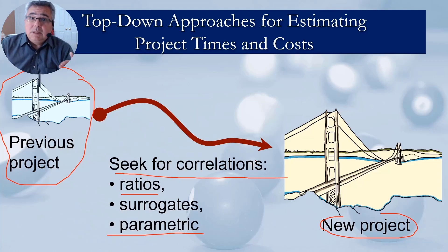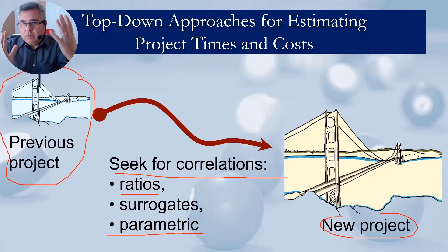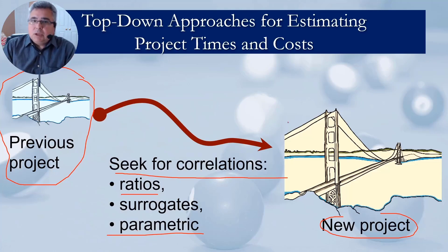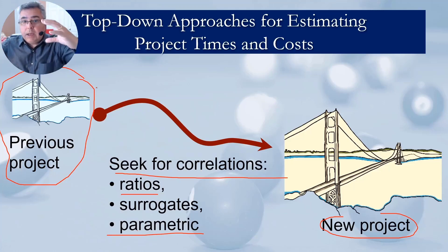That is a very rough estimate, because usually projects are different and you cannot simply replicate one from another. But it generally gives you some idea for the whole project. All top-down estimate techniques are based on taking an old project and projecting the new project as a whole, and then breaking it down to understand each part of the project.